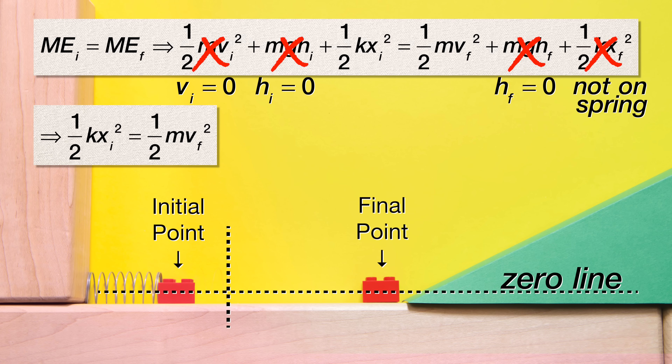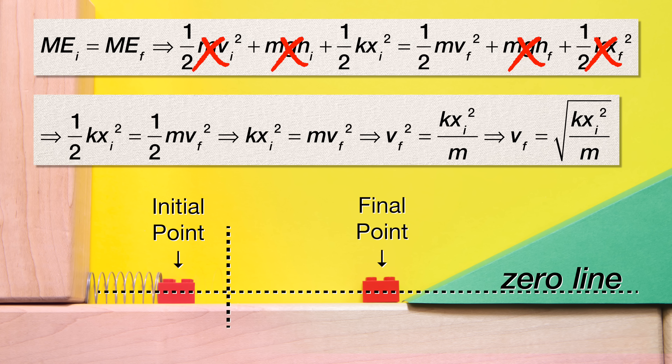Sadly, everybody did not bring mass to the party. We can multiply the whole equation by two, then divide both sides by the mass of the block, then take the square root of the whole equation to get the final velocity of the block equals the square root of the quantity: the spring constant times the initial displacement of the spring squared, all divided by the mass of the block.